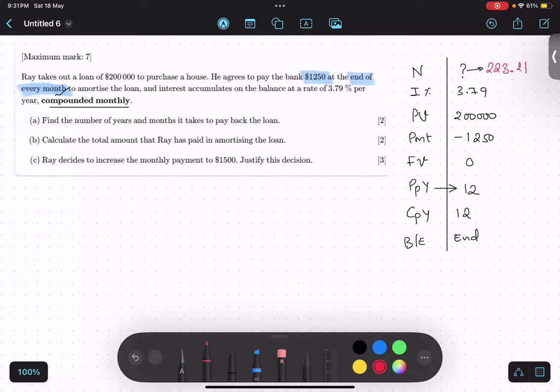But the question is asking, find the number of years and months. And what is this? 223 is what? 223 is only months. Making sense?